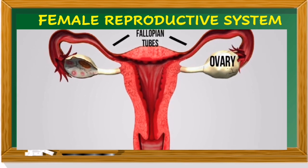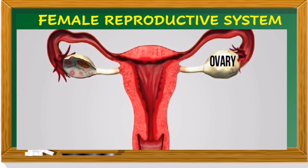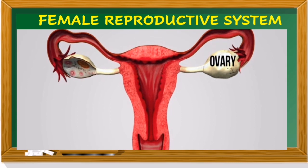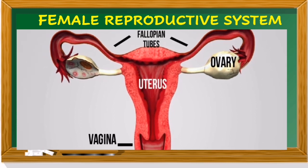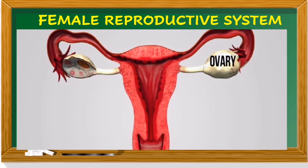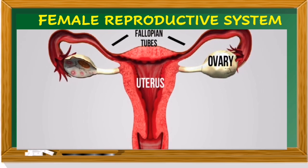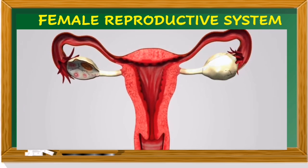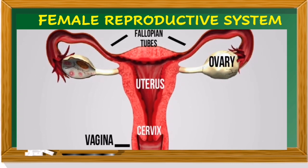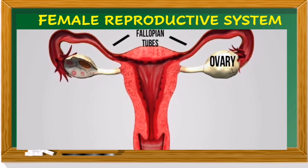Here is the female reproductive system. The parts of the female reproductive system include the fallopian tubes, uterus, ovary, vagina, and cervix, among others that are not labeled here.